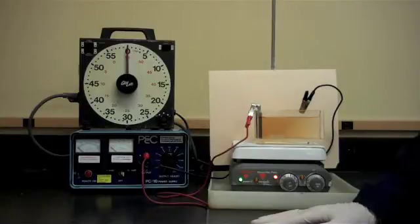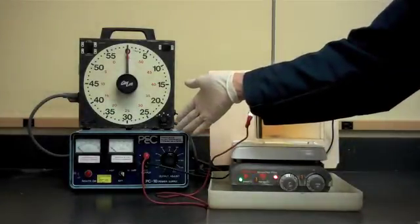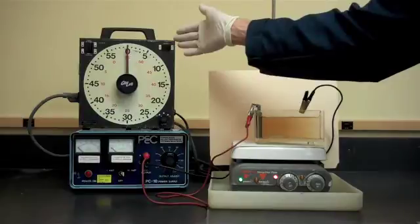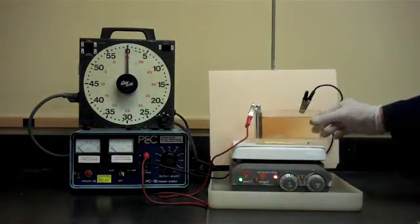The test usually uses a power unit which supplies direct current, a timer, a magnetic stirrer, and the Hull Cell container itself.